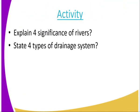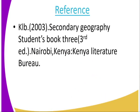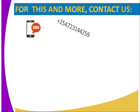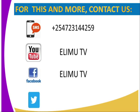We are going to look at the activity. Explain four significance of rivers. Number two, state four types of drainage systems. For reference, you can get the KCSE 2003 Secondary Geography Student Book 3, third edition. If you want to contact us, you can get us through SMS, through YouTube, Facebook, or Twitter.